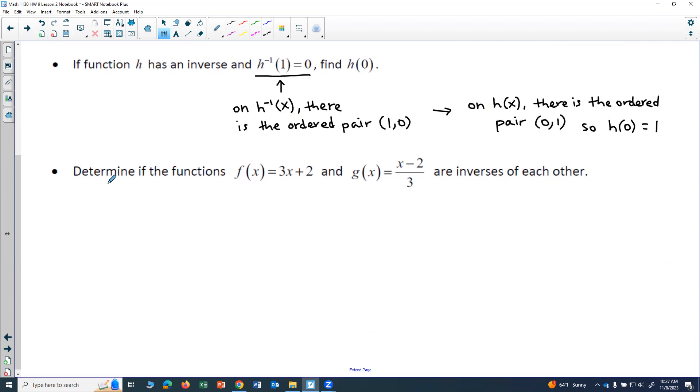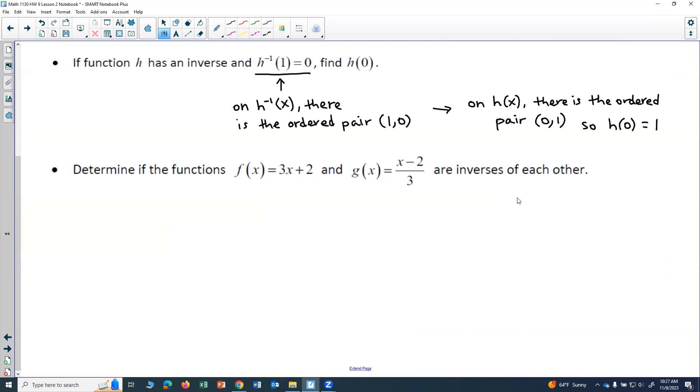In this last example, we want to determine if the functions f of x equals 3x plus 2, and g of x equals (x minus 2) over 3 are inverses of each other. And so what we want to do is we want to use that rule that if they're inverses, then f of g of x has to equal x, and g of f of x also has to equal x.